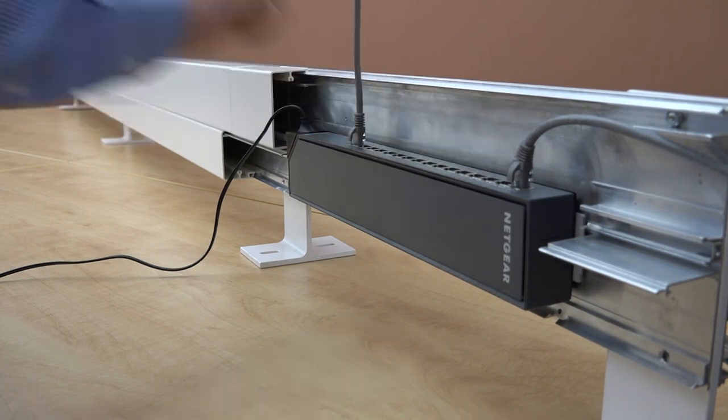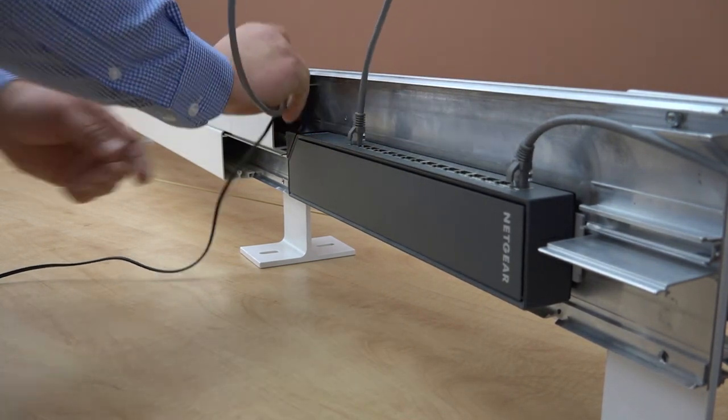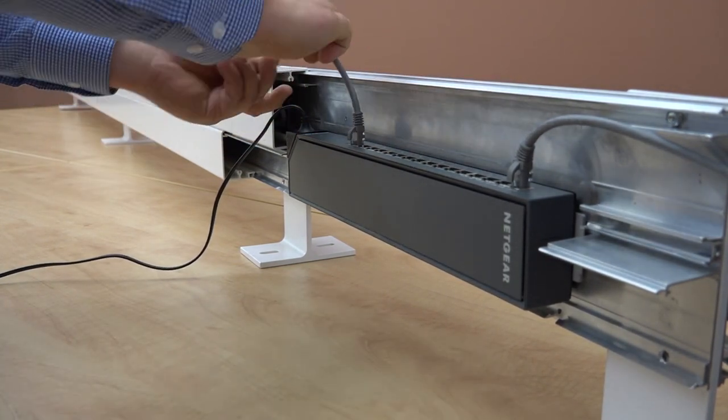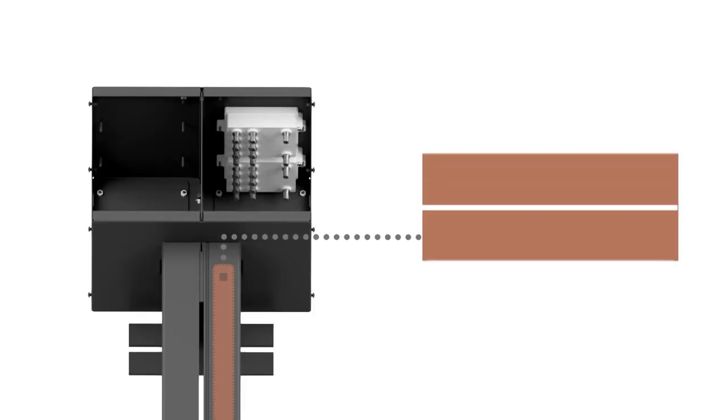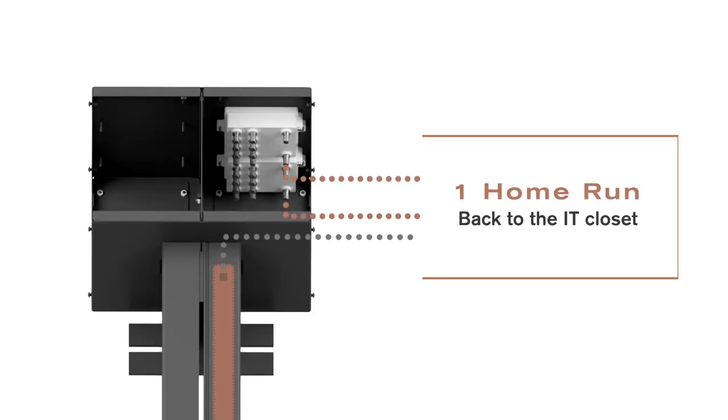Data and coax cable installation is much faster and simpler with the PERFIT system. It requires only one network home run from each switch or coax splitter back to the IT closet.